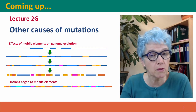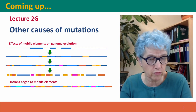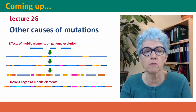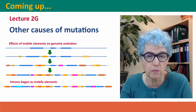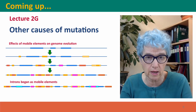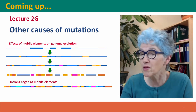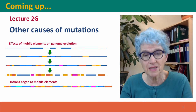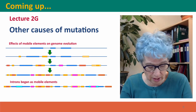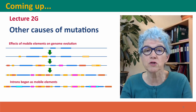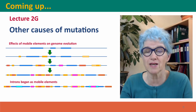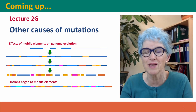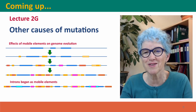Coming up next, we're going to talk about other causes of mutation. So far we've just thought about mutations caused by errors by DNA polymerase, but there are a lot of other ways that DNA sequences can change, and we'll talk about those in lecture 2G. I hope to see you there.